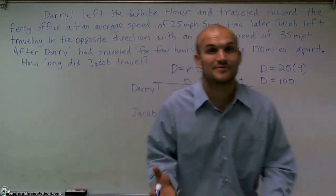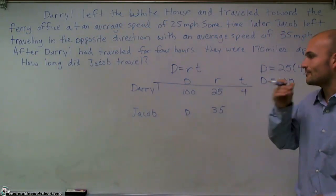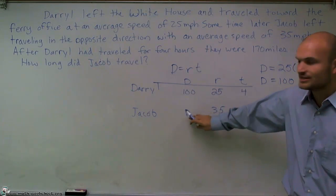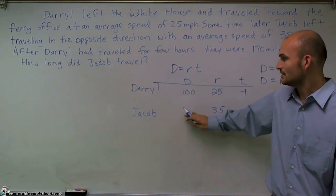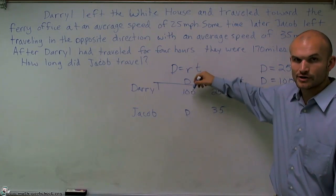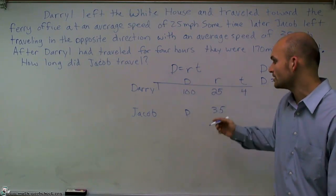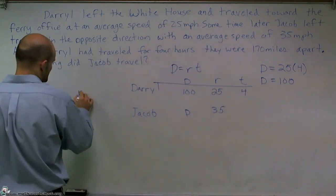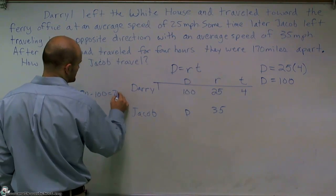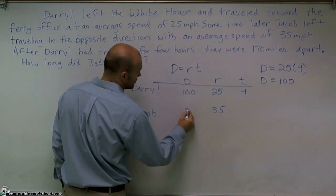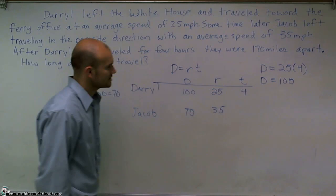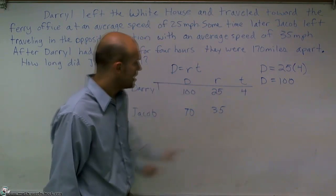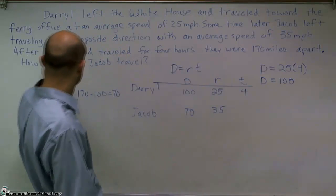So you've got to make sure you read your question very carefully. But we still need to figure out how far Jacob traveled. Well, if Daryl traveled 100 and they're 170 miles apart, I can do 170 minus 100 equals 70. So therefore, now I know that Jacob traveled a total of 70 miles, but we need to figure out what his time is.